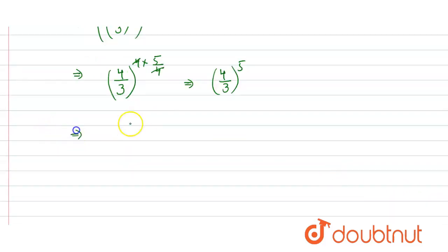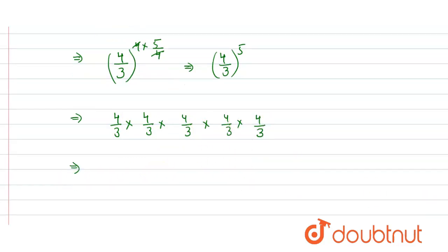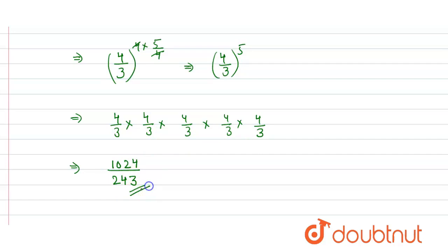Now we simply expand this. So it will be 4 by 3 multiplied 5 times: 4/3 × 4/3 × 4/3 × 4/3 × 4/3. That gives us 4 × 4 × 4 × 4 × 4 in the numerator, which equals 1024, divided by 3 multiplied 5 times in the denominator, which equals 243. So the answer is 1024 by 243.